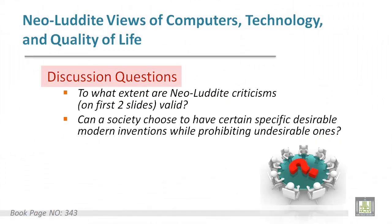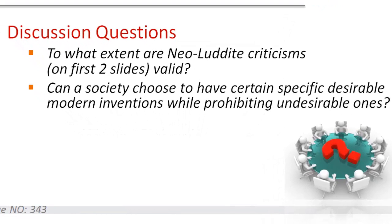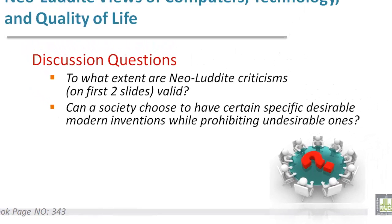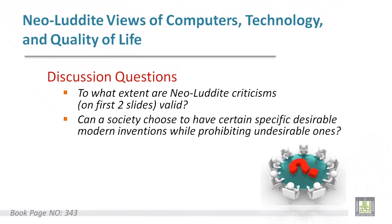At the end, discuss these two questions. First, to what extent are neo-Luddite criticisms valid? Second, can a society choose to have certain specific desirable modern inventions while prohibiting undesirable ones? Let's try to answer these questions, and see you in the next lecture. Goodbye.